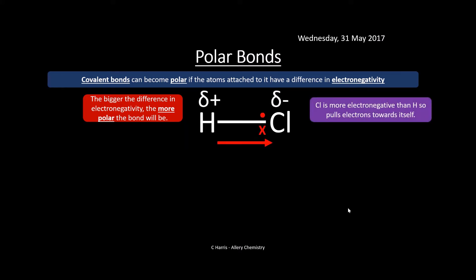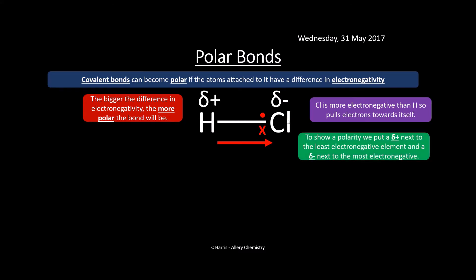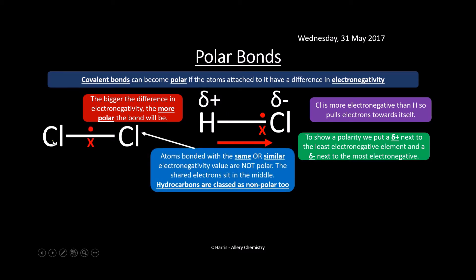Here we've got hydrogen and chlorine. Looking at the electronegativity difference, we do have a reasonable difference between hydrogen and chlorine. Chlorine pulls the electrons towards itself. Traditionally the electrons sit in the middle if there's no difference in electronegativity, but because chlorine is more electronegative, it pulls them towards itself. To show this polarity, we put delta symbols next to each atom — delta negative next to the chlorine, delta positive next to the hydrogen.